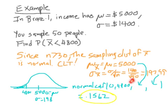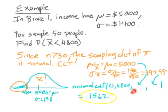We can draw the sampling distribution curve — it's normal because of the central limit theorem. We do normal CDF with upper bound 4,800, mean 5,000, and standard deviation 198. Notice it's almost exactly one standard deviation away. The final answer is about 15.6%. That's a very typical problem in section 9.3, and that wraps up 9.3.